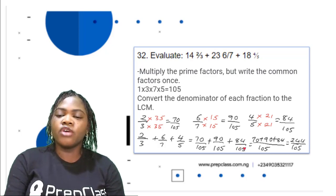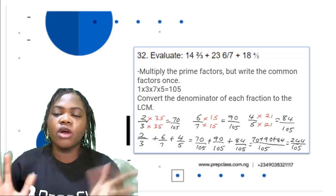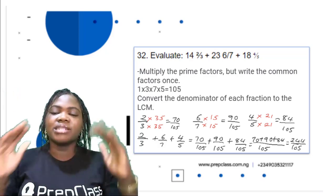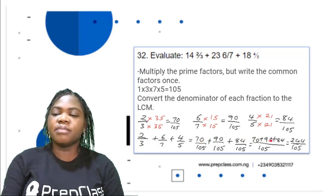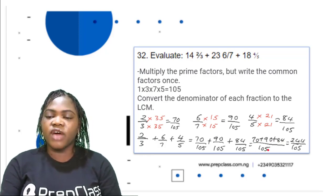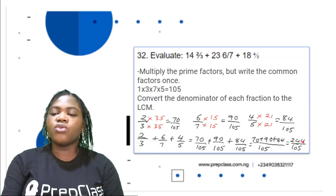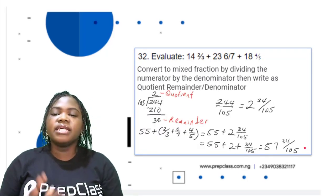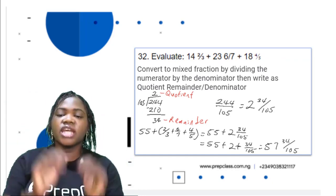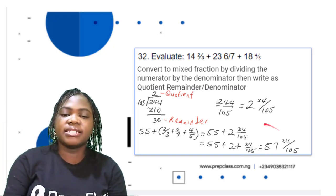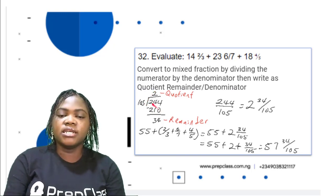Now all fractions are like fractions with denominator 105. Adding the numerators: 70 + 90 + 84 divided by 105. 70 + 90 = 160, 160 + 84 = 244. So we have 244/105. We convert this to a mixed fraction by dividing: quotient remainder over denominator.